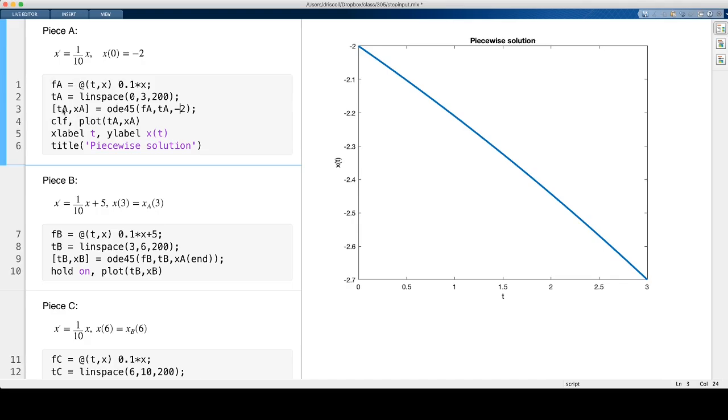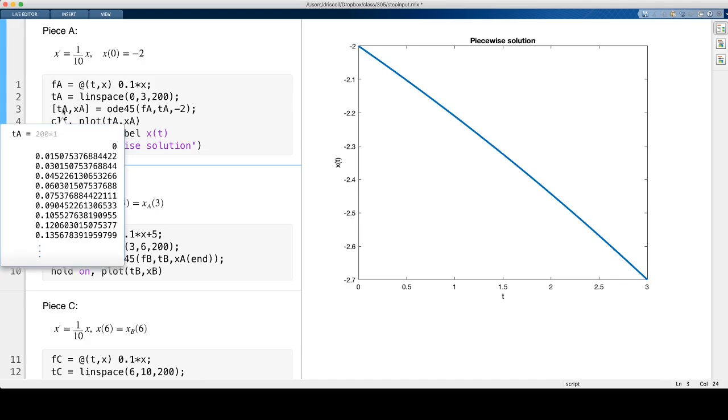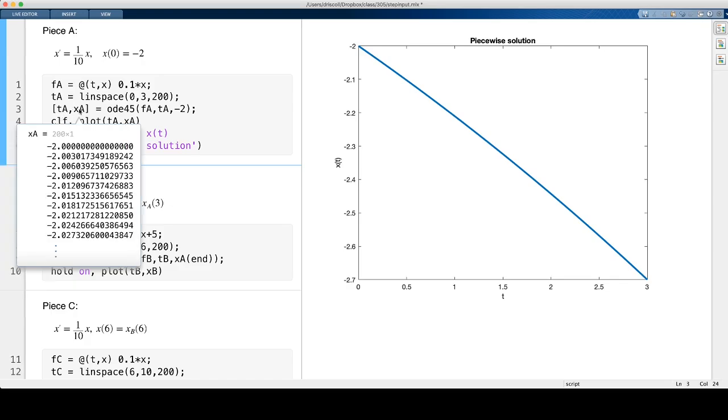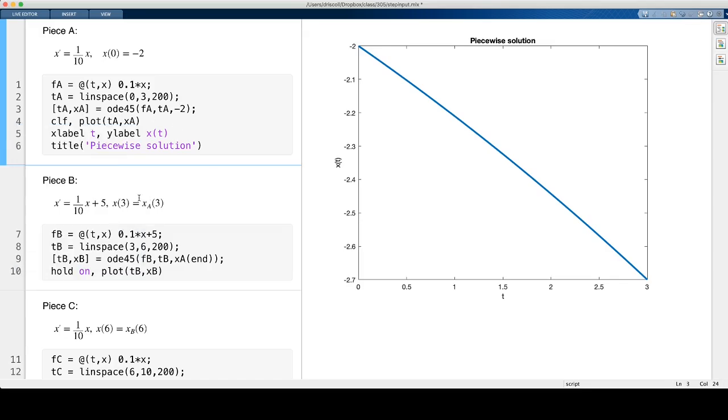Now that the solution is done, this ta is now a vector of 200 times from 0 to 3. And xa is a vector of 200 solution values at those same times.